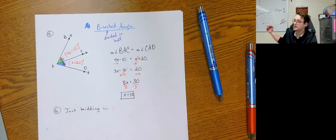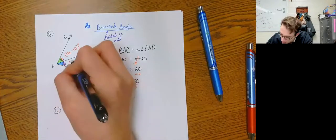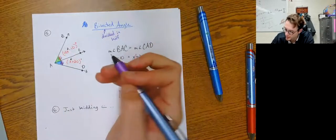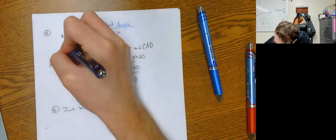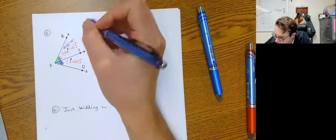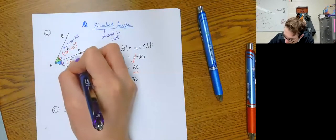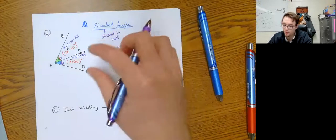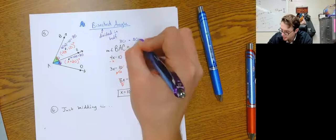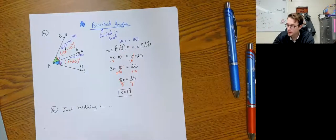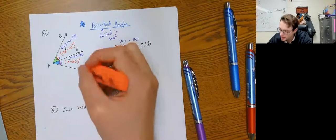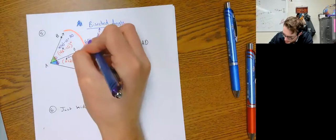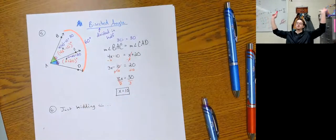If it says solve for x, x equals 10 is the answer. Going one step further — substitute in 10: 4 times 10 minus 10 equals 30, and 10 plus 20 equals 30. Both halves equal 30 degrees — they should be equal since the angle was bisected. Now I know the whole angle: 30 plus 30 equals 60 degrees total.